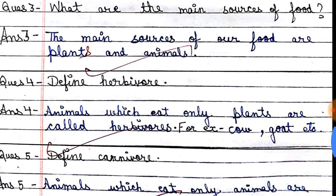Potatoes — we eat the stem. Next question: what are the main sources of food? The main sources of food are plants and animals, which we eat both.